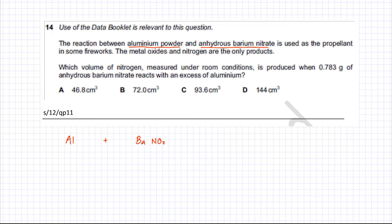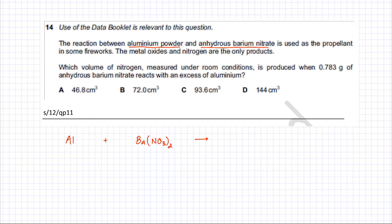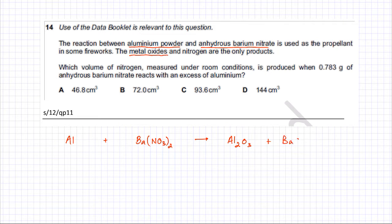The products of the reaction are the metal oxides and nitrogen only. Aluminium oxide is Al₂O₃, and you have barium oxide which is BaO, plus nitrogen as the only gas product. So this is your reaction for aluminium reacting with barium nitrate.